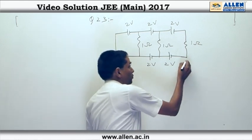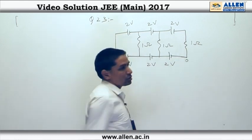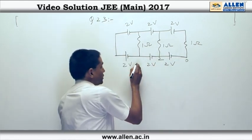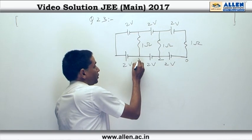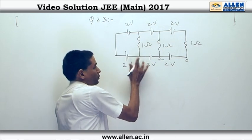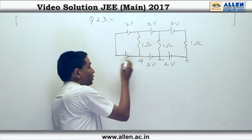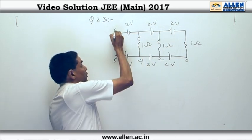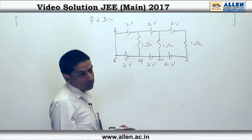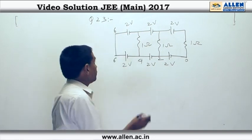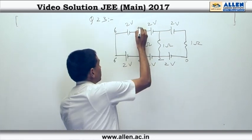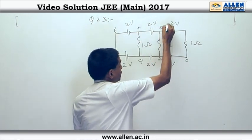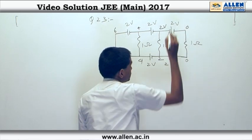I am going to assume that here the potential is 0 volt. So this point has a potential of 2 volt, this point has a potential of 4 volt, this has a potential of 6 volt. So this point also has a potential of 6 volt, this has 4 volt, this has 2 volt, and this is 0.